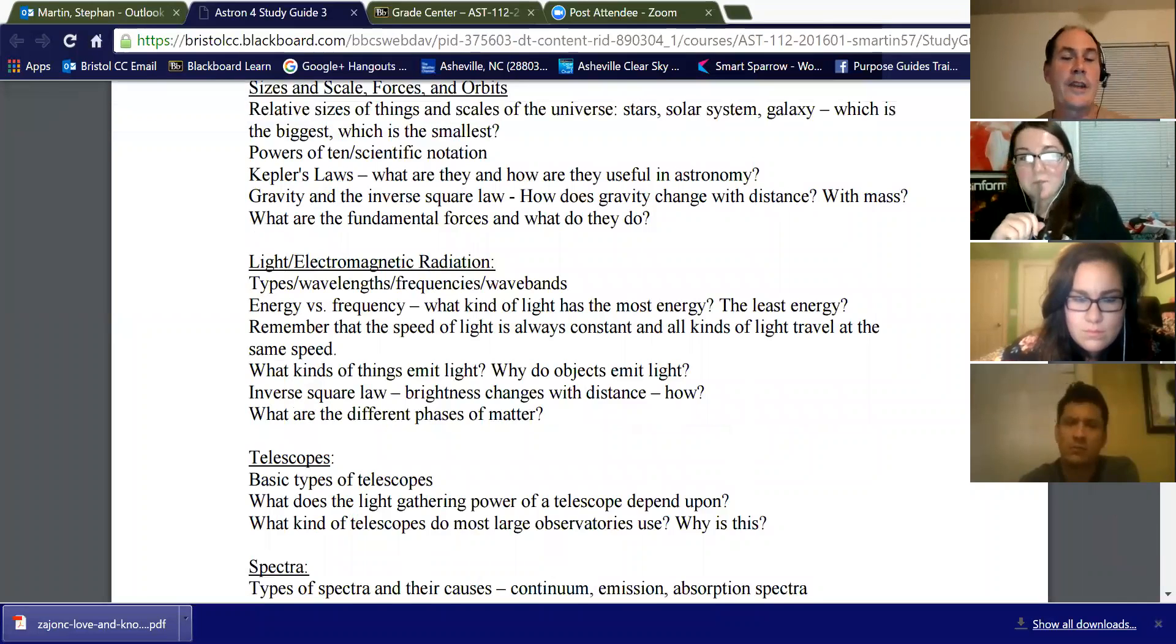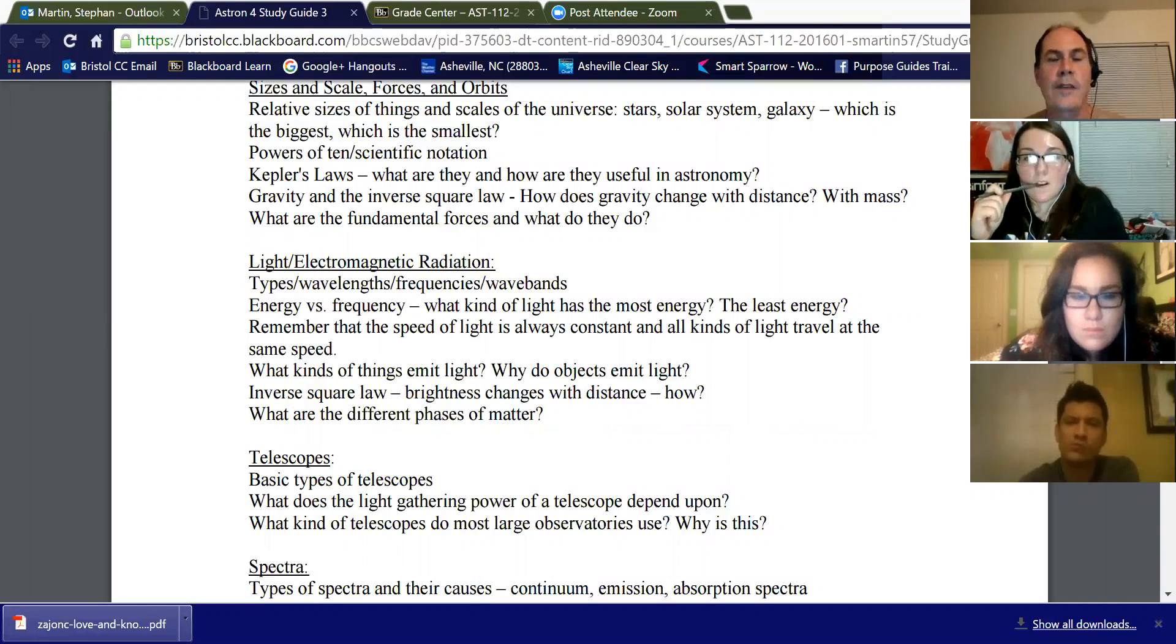Okay, let's talk about light. Essentially know about the different types of light. Basically, light is the same thing, whether it's gamma rays, x-rays, radio, infrared. The only difference between that is the frequency and wavelength. So it's all electromagnetic radiation. The difference is just wavelength and frequency.